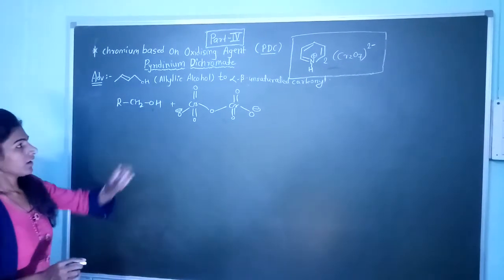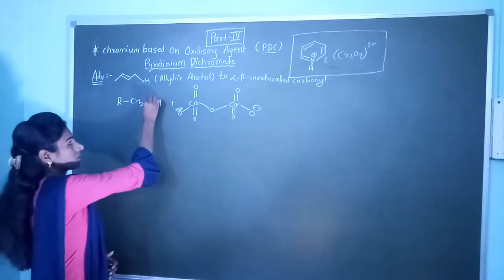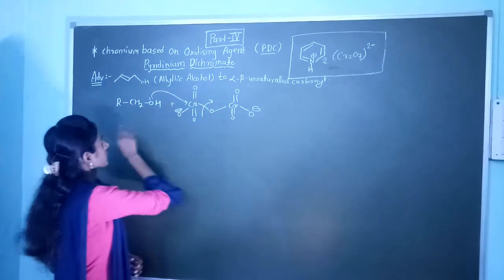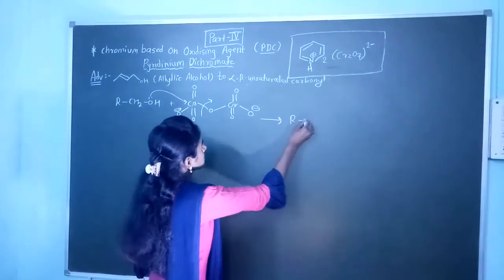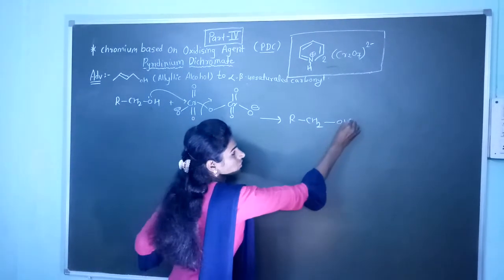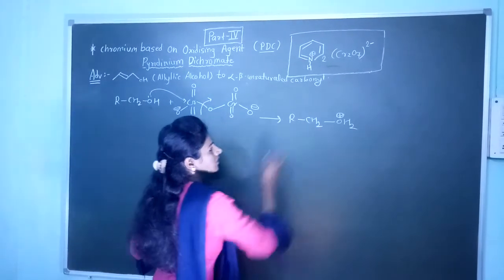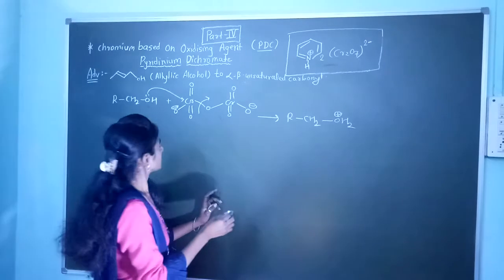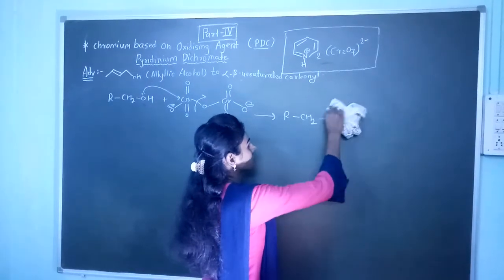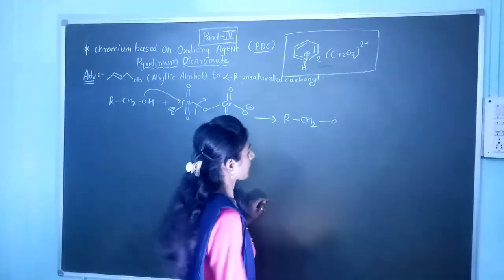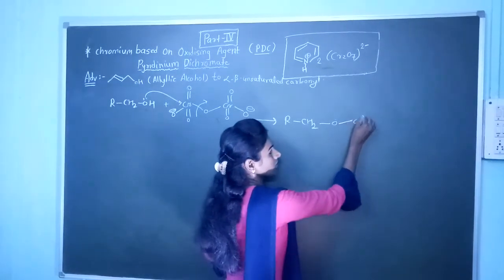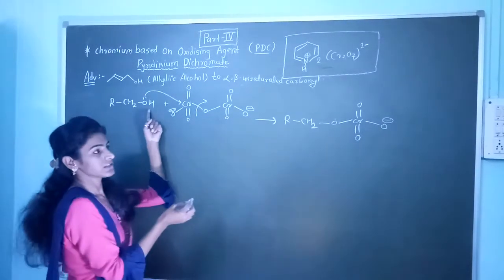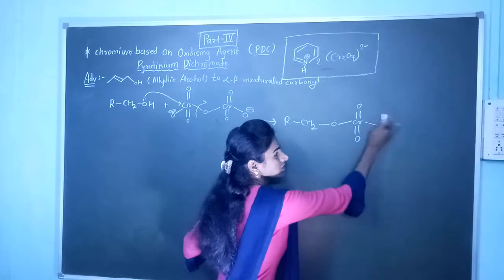The lone pair of this oxygen will attack over the chromium atom, and that group leaves, giving RCH₂OH₂⁺. Then, this group is in the vicinity of chromium and O⁻. This O⁻ will take the hydrogen atom and it becomes OH.